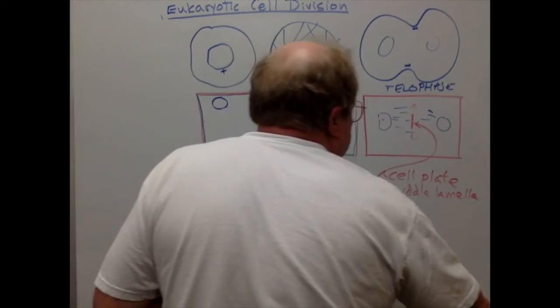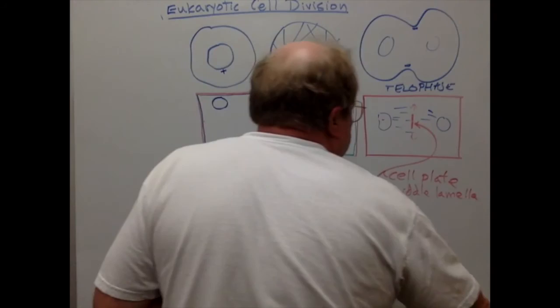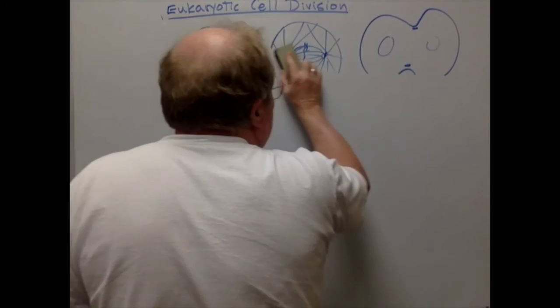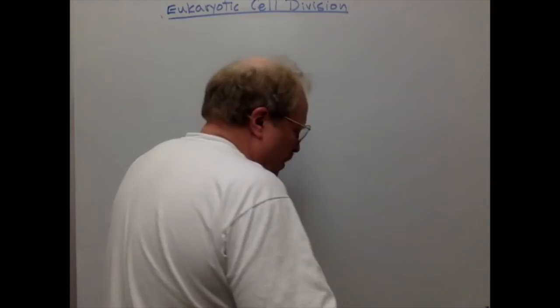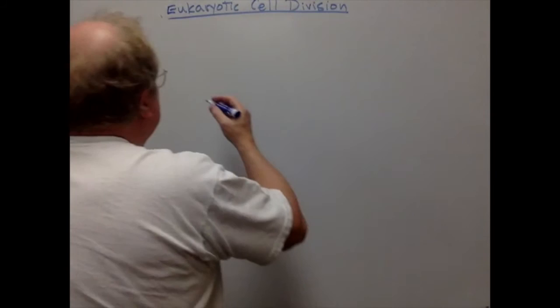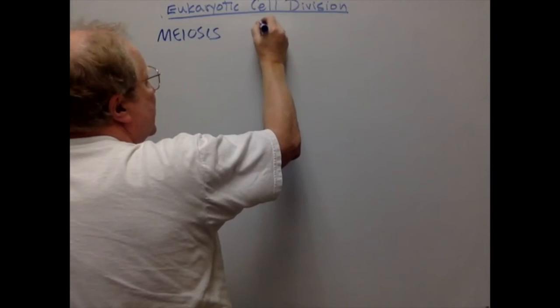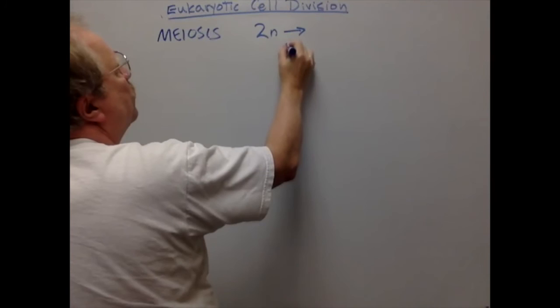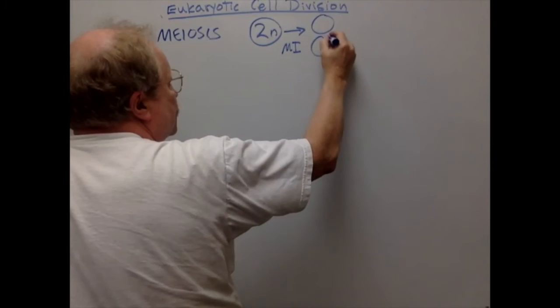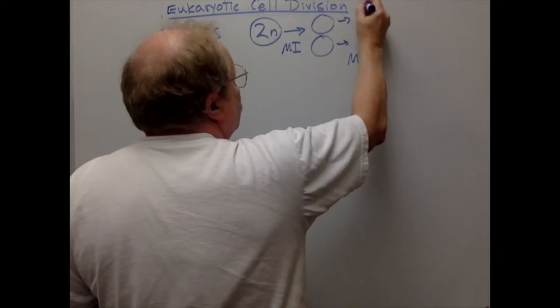Now let's move on and look at the process of meiosis. Meiosis is a cell division that takes a diploid cell through two divisions. The first is meiosis one, producing two cells from a single diploid cell, and then meiosis two, in which each of those divides to make four cells. All four of those cells will be haploid.